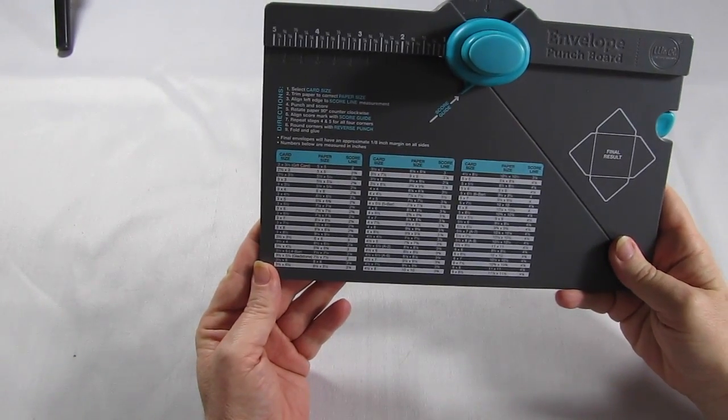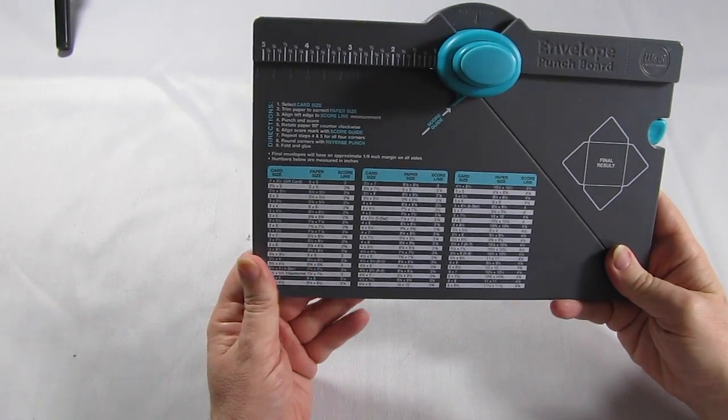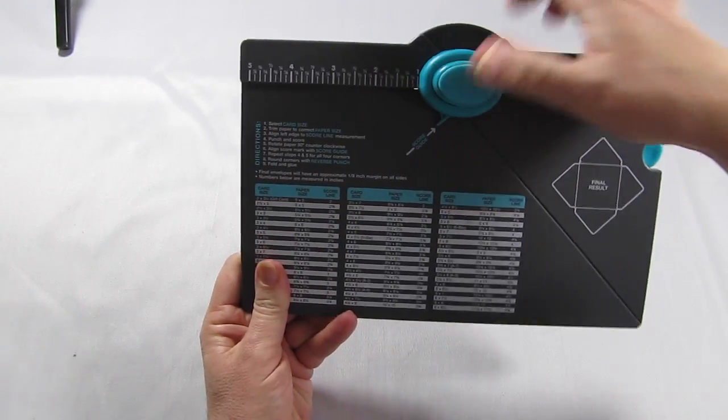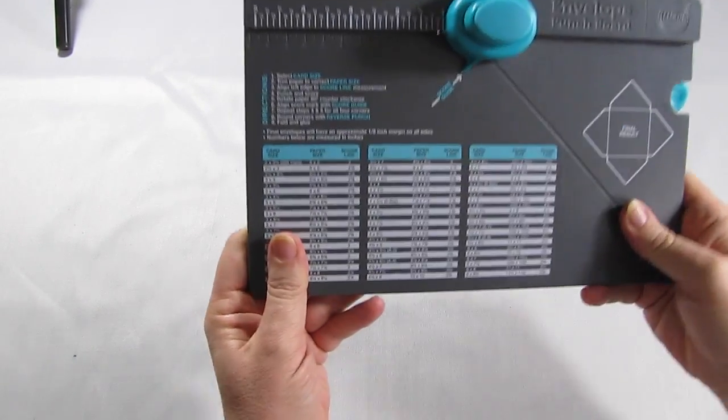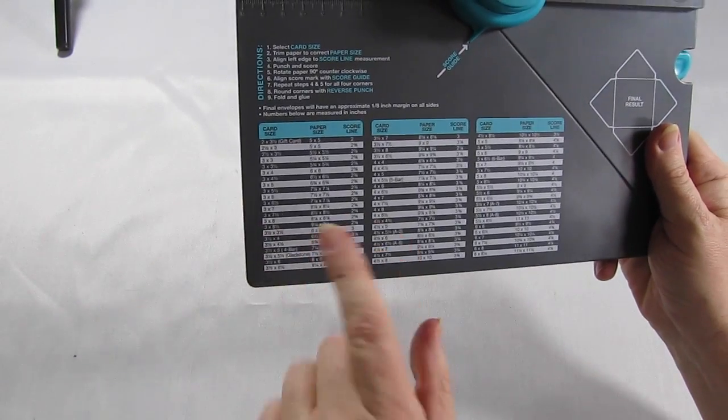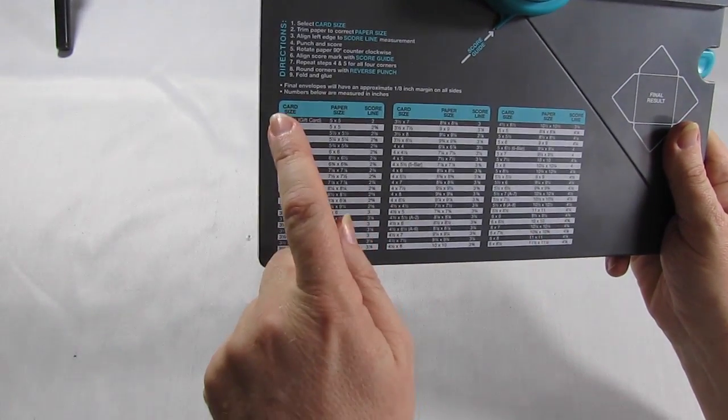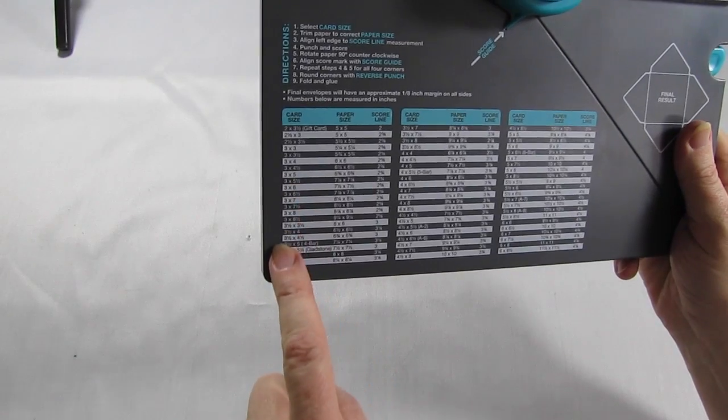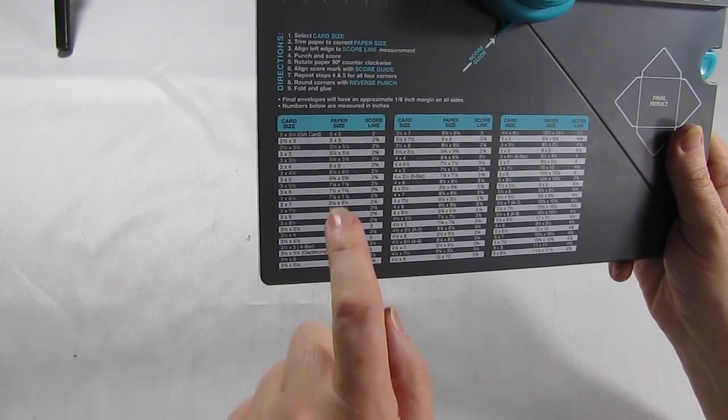Well this is the envelope punch board. It's very straightforward and right on top here there's your punch. Now on the front of the board you see all these numbers. The first column in each one of these is the size of card you've made and that you need an envelope to fit it.